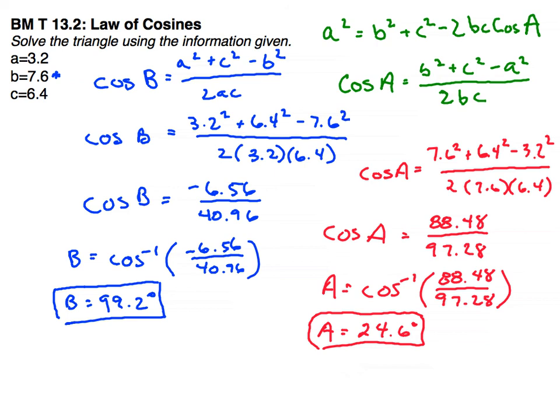And then finally for angle c, I'm just going to subtract those two from 180. So angle c is going to be 180 minus 99.2 minus 24.6, which is going to equal 56.2 for angle c.